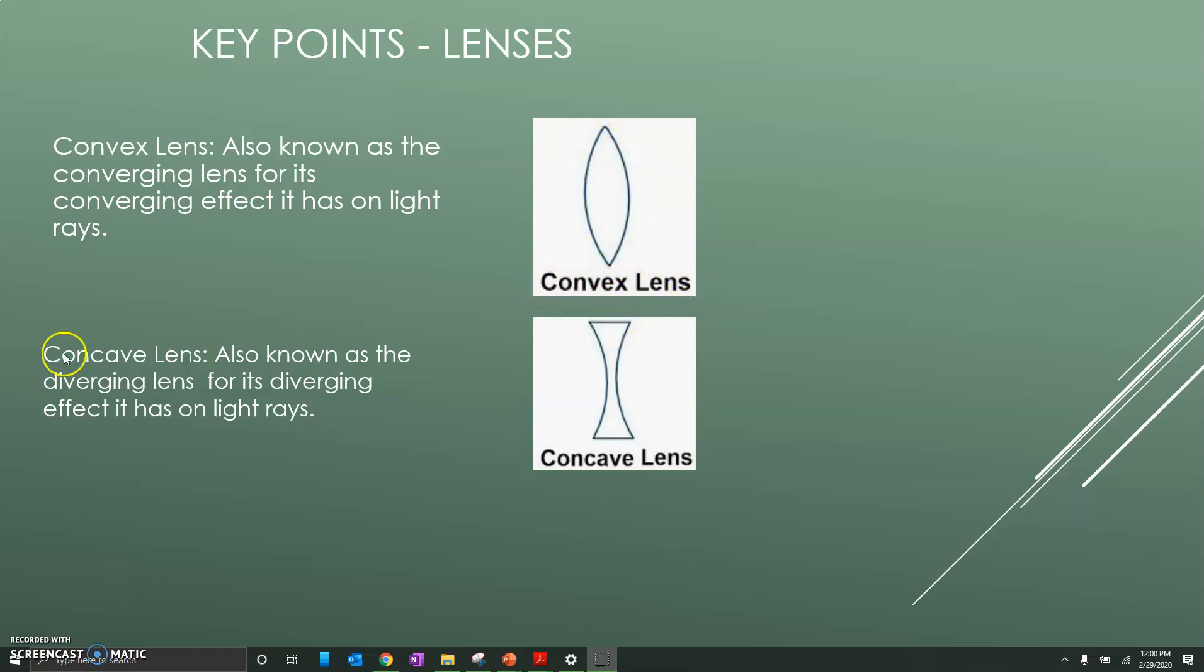That's our convex lens and then we have our concave lens, which is known as the diverging lens for its diverging effect it has on light rays. And the concave lens, I can remember that it's concave because it's like a cave that you could go into, right? The convex you can't go into, but the concave you can because it's like a cave. Pretty stupid, but nonetheless, if it helps you remember it, it helps you remember it.